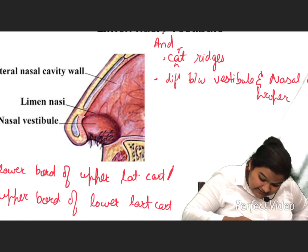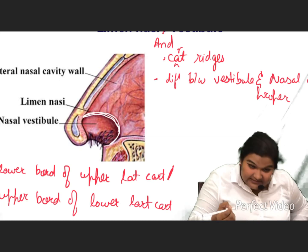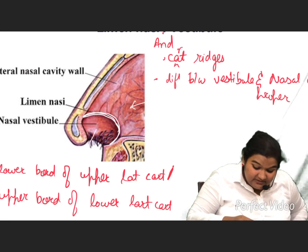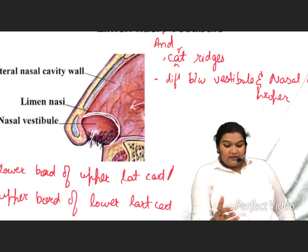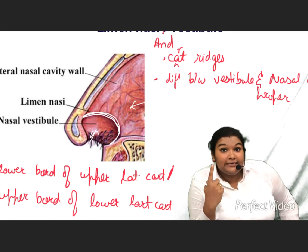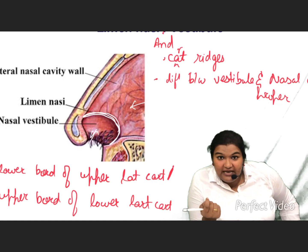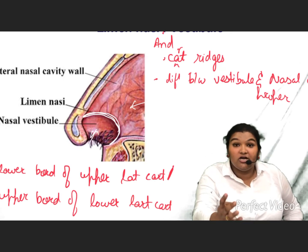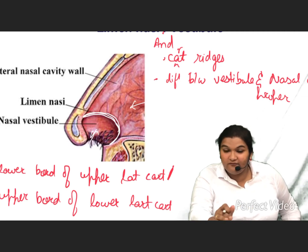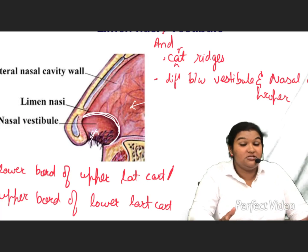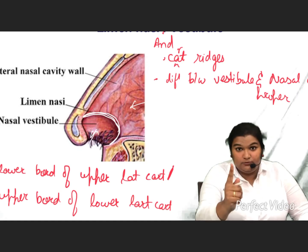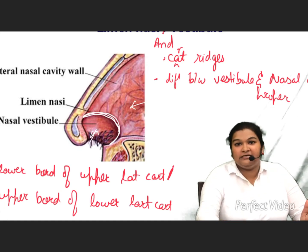This is the limen nasi. In this image you can see the nasal cavity proper and this is the vestibule. The vestibule is an area below the limen nasi which contains hair follicles and sebaceous glands. These hair follicles trap larger suspended foreign body particles in the air when we breathe in.